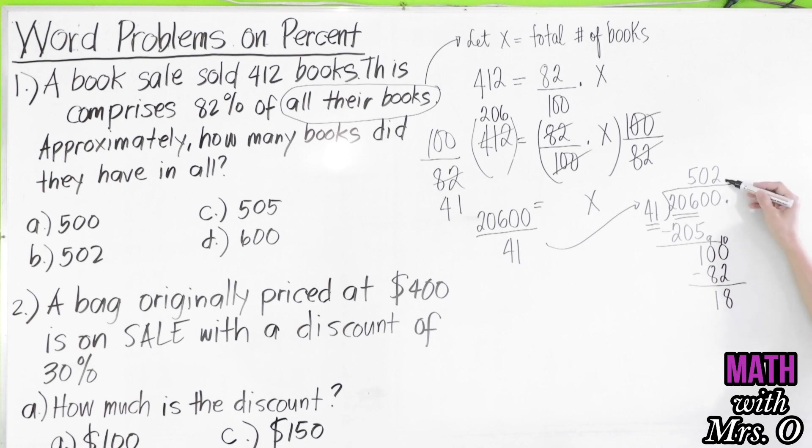So, we put a decimal point here and bring down zero again. 180 divided by 41. Let us approximate. Do we have 4 here? 4 times 1 is 4. 4 times 4 is 16. But wait. We have to stop. Because we're talking about books. Can we have 0.4 books? No. So, therefore, we can now finalize that we have